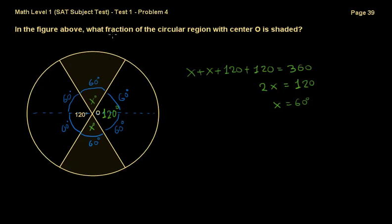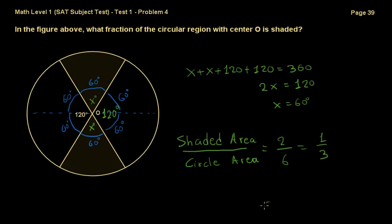What we're looking for is the fraction of the circular region with center O that is shaded. So it's shaded area over the total area of the circle. Let me write this fraction down. Shaded area over the circle area. As I said before, we know that only two pieces are shaded. So that's two over the whole circle which is made of those six pieces over six. And this can be translated to one third. That's the answer. The correct answer is D.